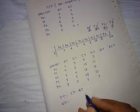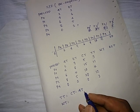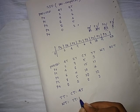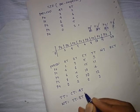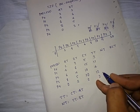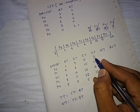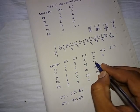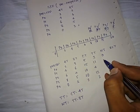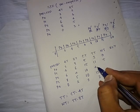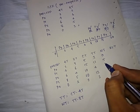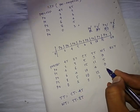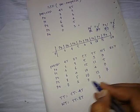Waiting time formula is turnaround time minus burst time. For P0: 3 minus 3 equals 0. For P1: 11 minus 6 equals 5. For P2: 4 minus 4 equals 0. For P3: 12 minus 5 equals 7. For P4: 2 minus 2 equals 0.